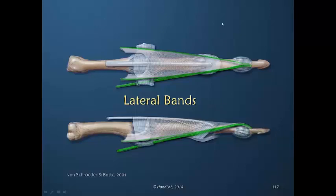The same thing is true on the ulnar side, but on the ulnar side there is no lumbrical muscle insertion. So the interosseous shares its power with the lateral band on that side as well as with the oblique and transverse fibers. In other words, only a portion of the interosseous insertion is going directly into the lateral band — the power is shared.